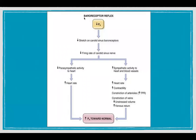When one rises from a sitting position there is a decrease in blood pressure, causing decreased stretch on the baroreceptors. The decreased stretch decreases the firing rate of the carotid sinus nerve and aortic nerve, which increases sympathetic activity to the heart and blood vessels — increasing heart rate, increasing myocardial contractility, and increasing venous return. In addition, it decreases parasympathetic activity to the heart, so heart rate increases and that restores blood pressure back towards normal.